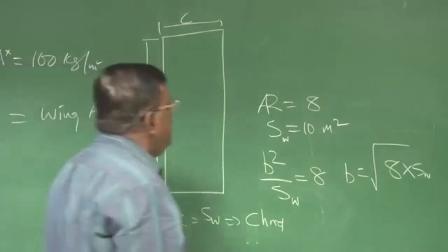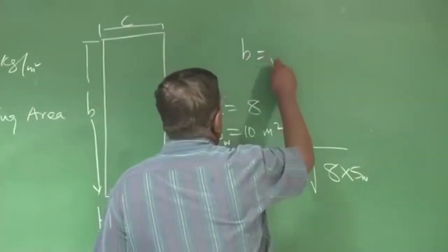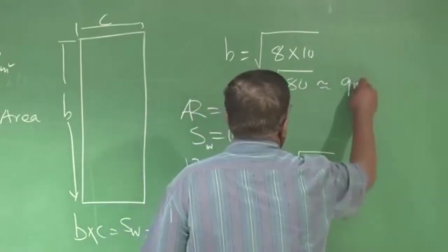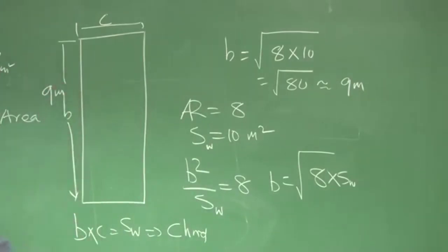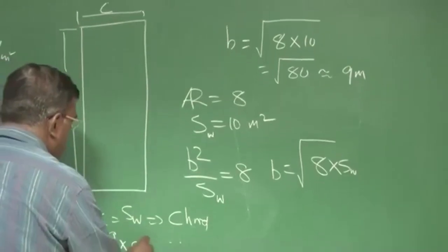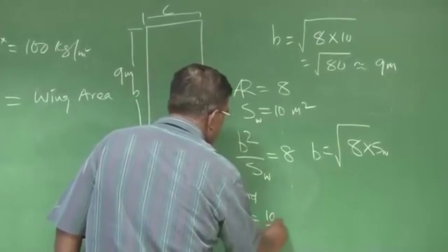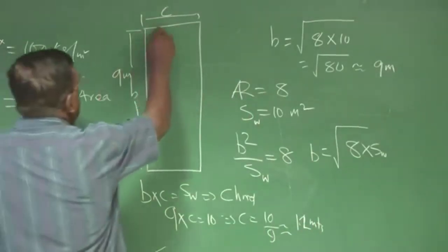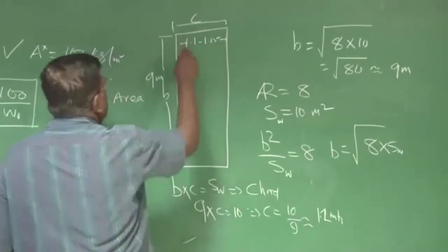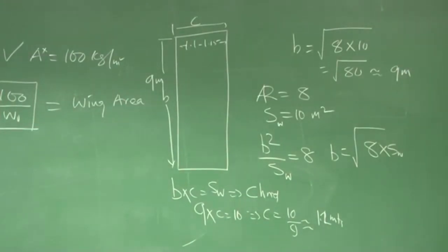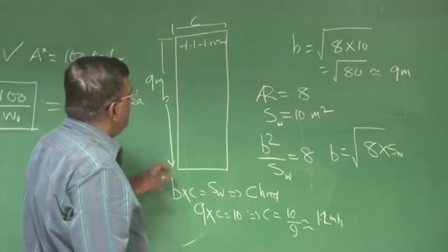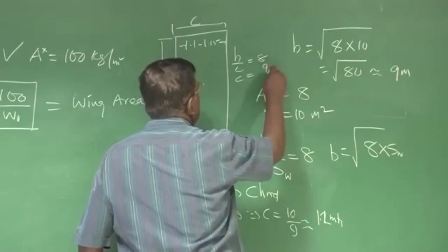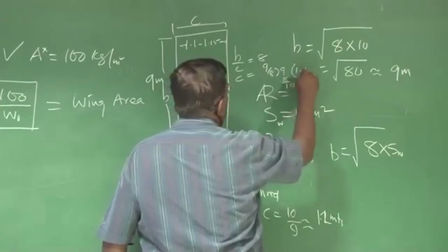If I take this number, B will be the square root of 8 into 10, that is the square root of 80 — it could be around 9 meters roughly. Span is 9 meters, and 9 into C equals 10 divided by 9, which is around 1.1 to 1.2 meters. You can cross-check: for a rectangular wing, aspect ratio is also B by C. So B by C equals 8, giving C equal to B by 8 — which is 9 by 8, approximately 1.1 meters.